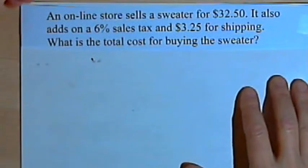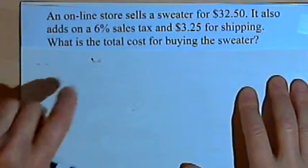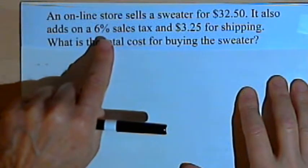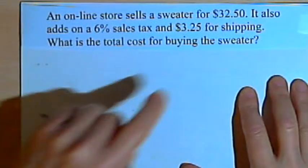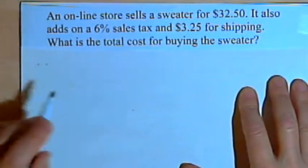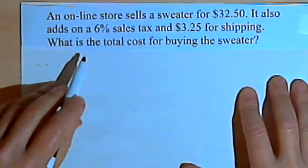An online store sells a sweater for $32.50. It also adds on a 6% sales tax and $3.25 for shipping. What is the total cost for buying the sweater?